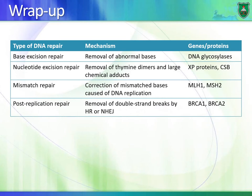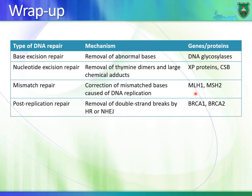To summarize the four repair mechanisms: base excision repair is catalyzed by DNA glycosylases, which remove abnormal bases. Nucleotide excision repair uses XP proteins and the CSB protein, which is also associated with transcription-coupled repair. Mismatch repair uses MutL, MutS, and MutH in bacteria, and MLH1 and MSH2 in humans. Post-replication repair involves BRCA1 and BRCA2 in the context of breast cancer, and damage is repaired by recombination.